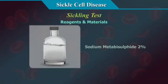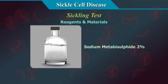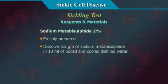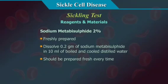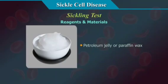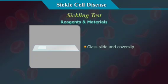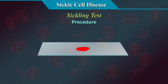Reagents and Materials: 1. Sodium metabisulphide 2% — freshly prepared by dissolving 0.2 grams of sodium metabisulphide in 10 ml of boiled and cooled distilled water; it should be prepared fresh every time. 2. Petroleum jelly or paraffin wax. 3. Glass slide and cover slip.